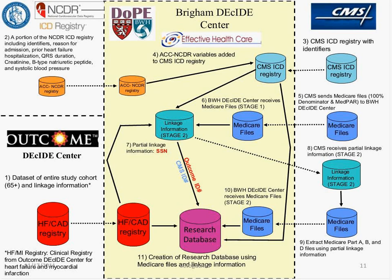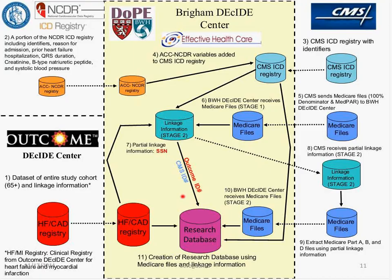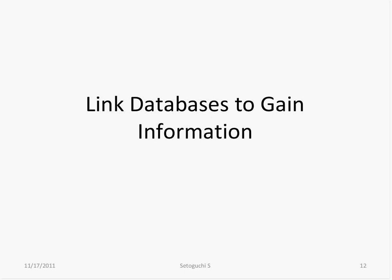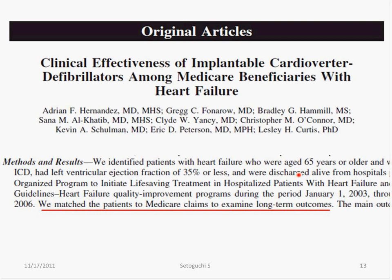Here is a figure from my ongoing study at the Brigham to assess the comparative effectiveness of ICDs. We're bringing in multiple registries: the Heart Failure Registry from Outcome Sciences, the ACC DCR ICD Registry, and the CMS ICD Registry — all linked to Medicare data to create a research database. You can also link a database to simply gain information, as colleagues at DCRI did by linking the guideline heart failure registry to Medicare to examine long-term outcomes.